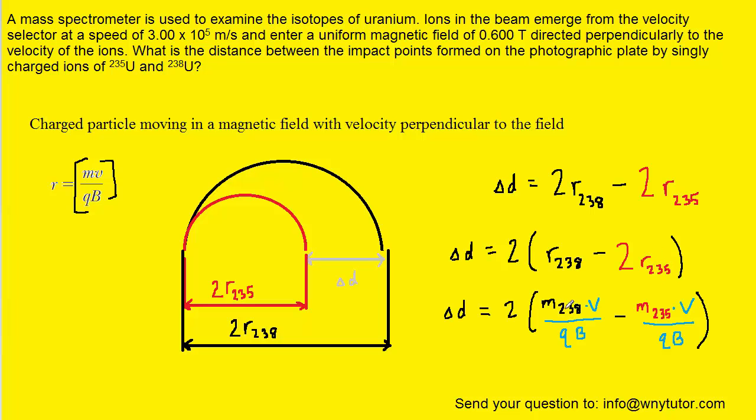So, notice in both expressions we have an MV over QB, but what we've done is we've strategically colored the V, Q, and B in a separate color because the speed, charge, and magnetic field for each particle is the same.